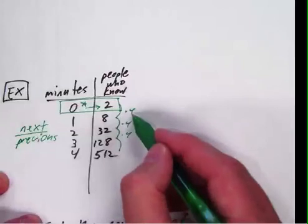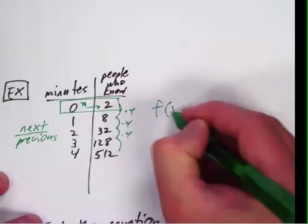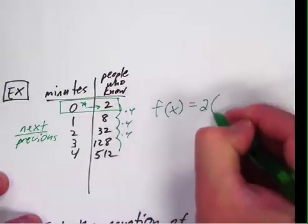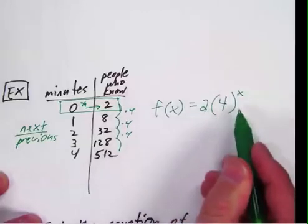So we need to know what it starts at, which is the number 2, we need to know what it multiplies by, in this case it's 4. Our equation would simply be f of x equals, it starts at 2, it's multiplied by 4 each time, therefore it's 2 times 4 to the x.